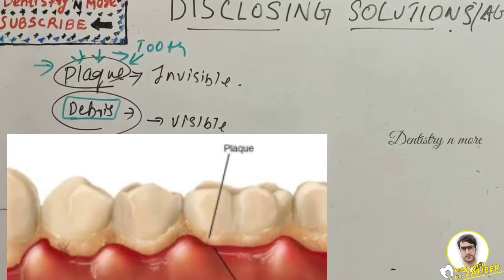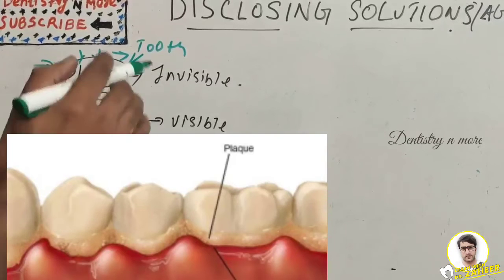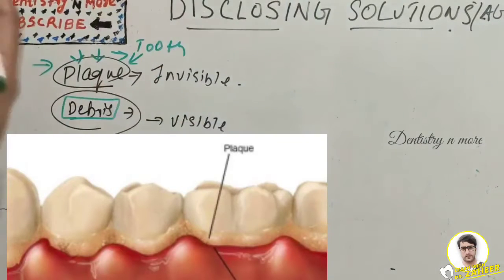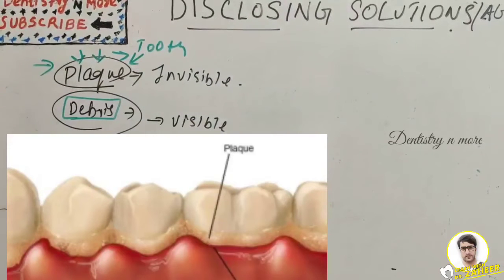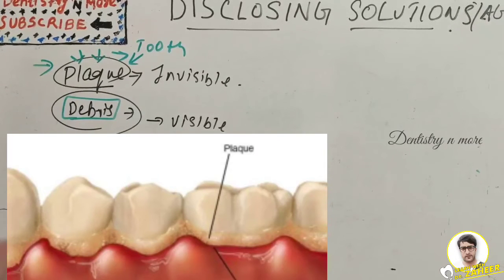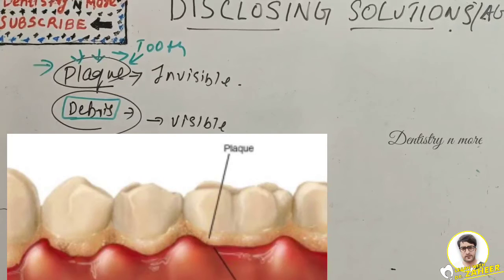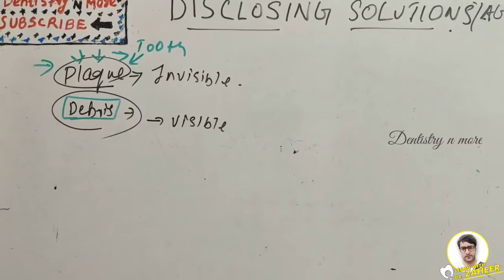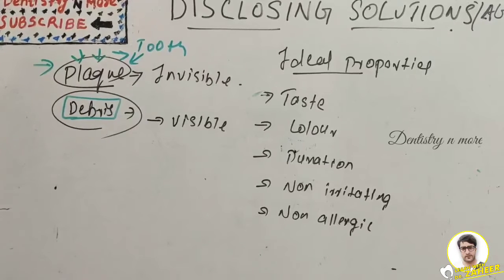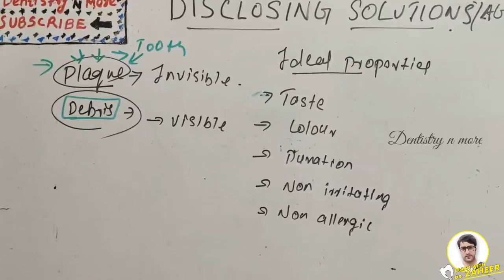So disclosing solutions are solutions which help us to visualize the plaque. They are used for examination purposes — during research, or after cleaning to confirm whether all the plaque is gone. Plaque cannot be removed by normal brushing; it has to be removed using professional cleaning, that is oral prophylaxis.